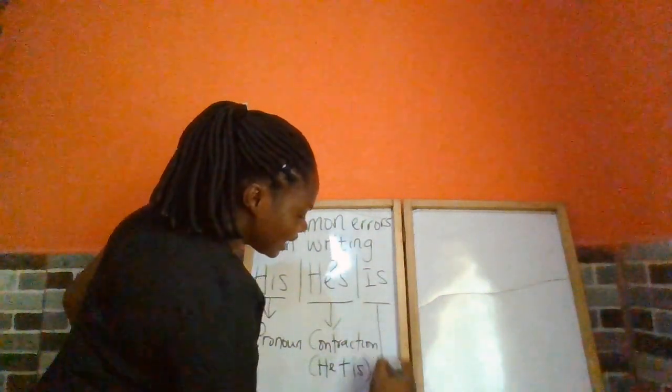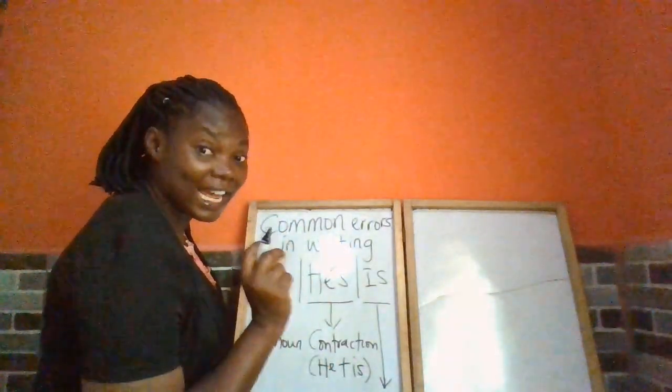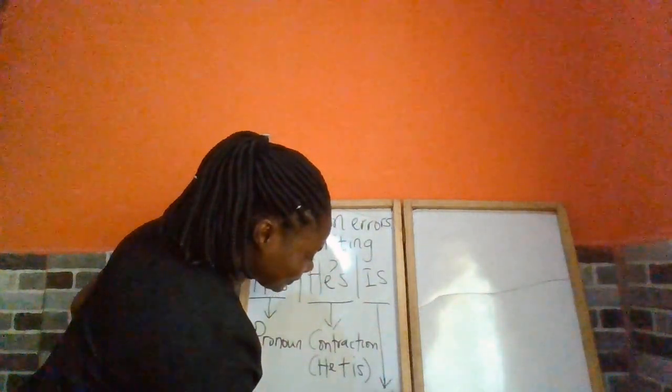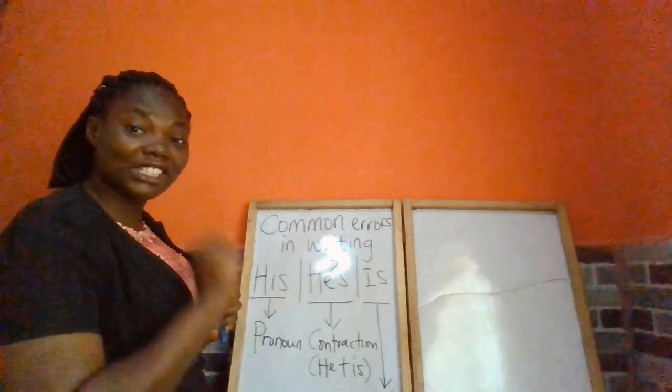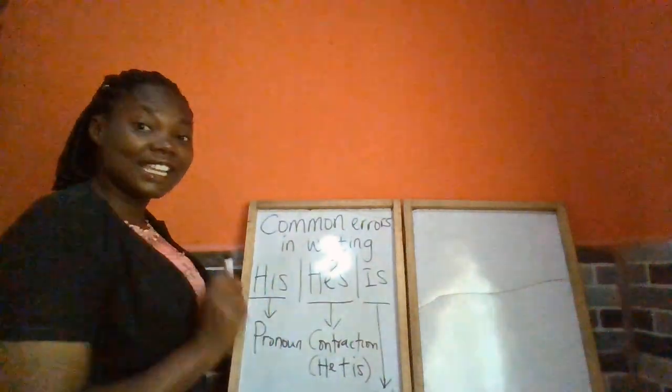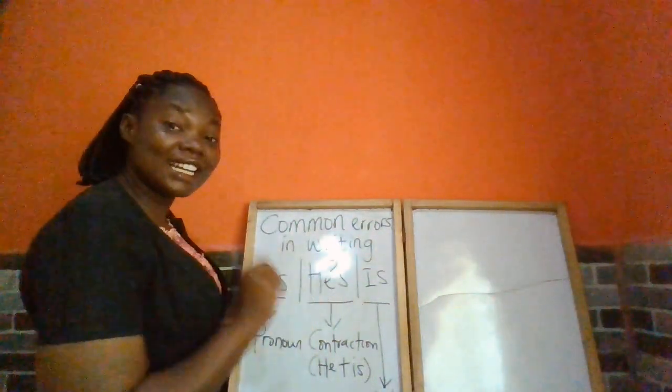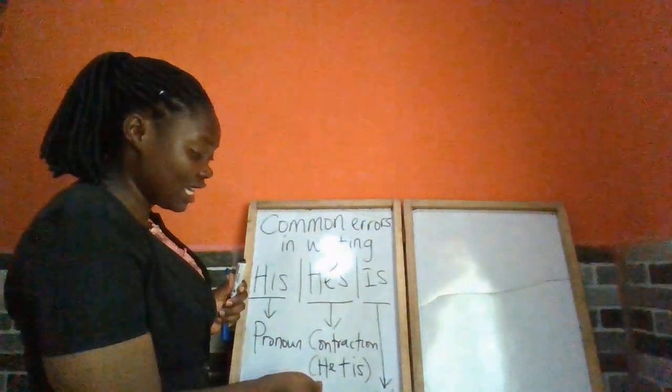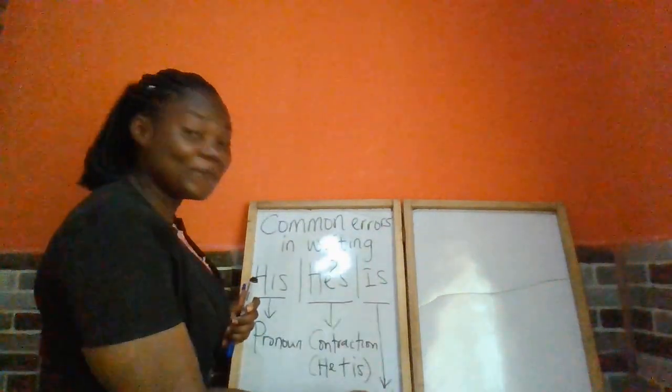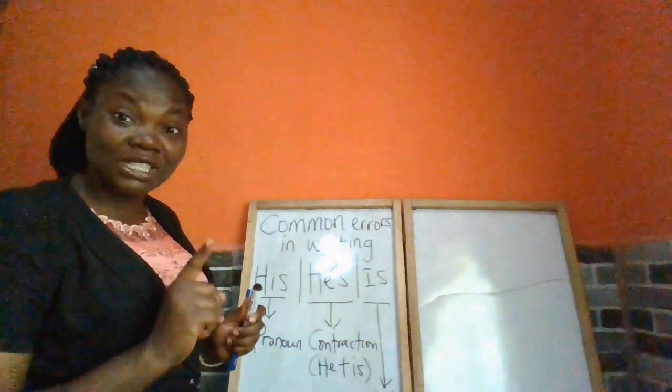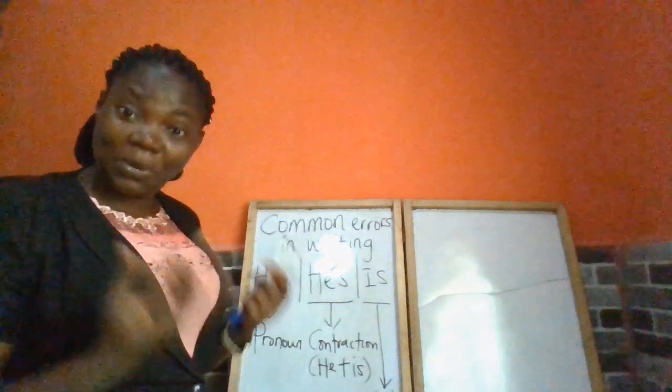And this one, is, is a verb, an auxiliary verb. Let's go through again. His, H-I-S, is a pronoun for males. He's is a contraction, the combination of he and is. Is, I-S, is a verb, an auxiliary verb used for a singular subject. So how do we use these three words correctly in writing?